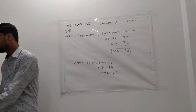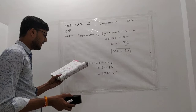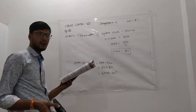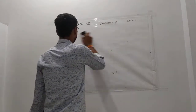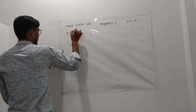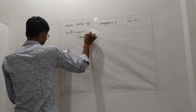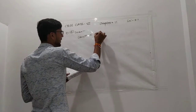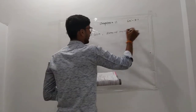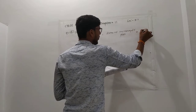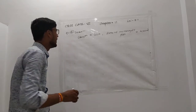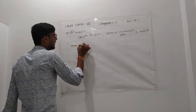Now question number three: find the breadth of a rectangular plot if the area is 440 meter square and the length is 22 meters. Also find its perimeter. Given: area of rectangular plot is 440 meter square and length is 22 meters. We need to find the breadth and perimeter.